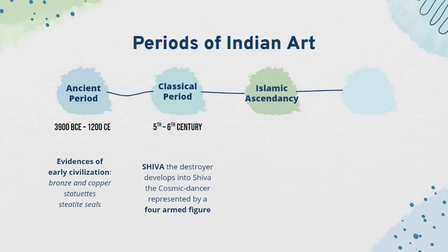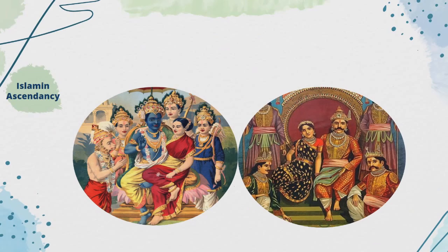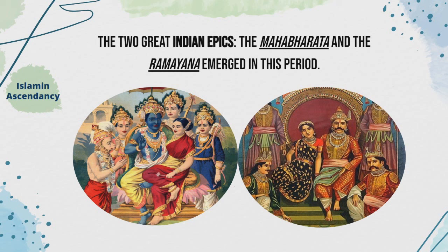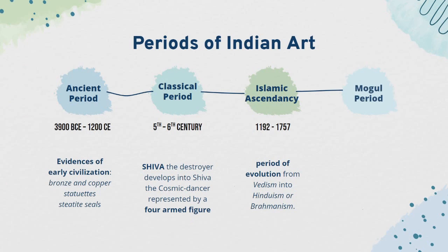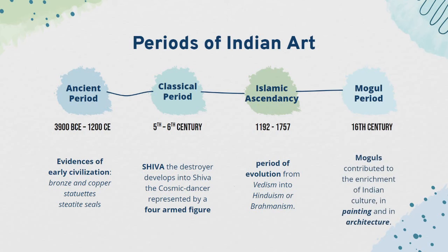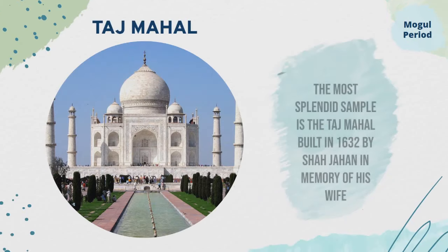Next is the Islamic Ascendancy, 1192 to 1757. This was the period of evolution from Vedism into Hinduism or Brahmanism. The two great Indian epics, the Mahabharata and the Ramayana, emerged in this period. And last is the Mughal Period, 16th century. Mughals contributed to the enrichment of Indian culture in painting and in architecture. The most splendid example is the Taj Mahal, built in 1632 by Shah Jahan in memory of his wife.